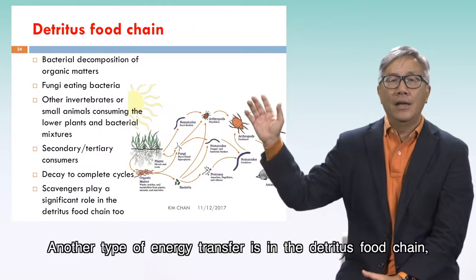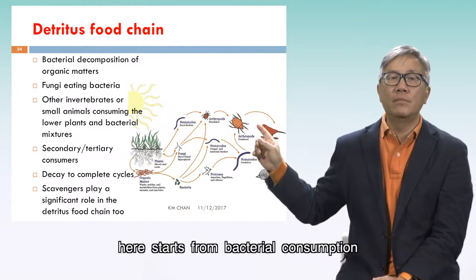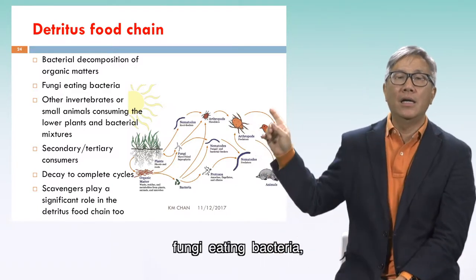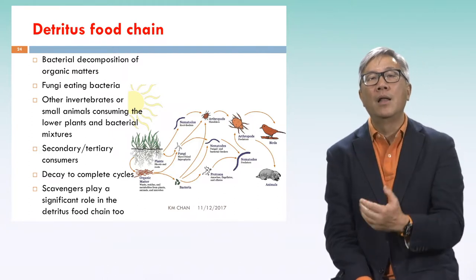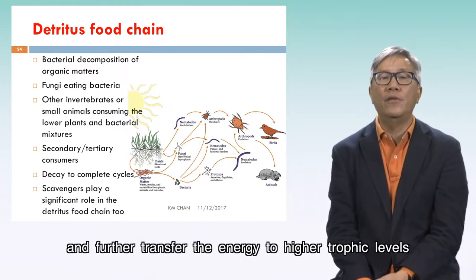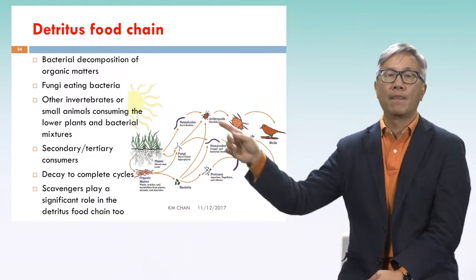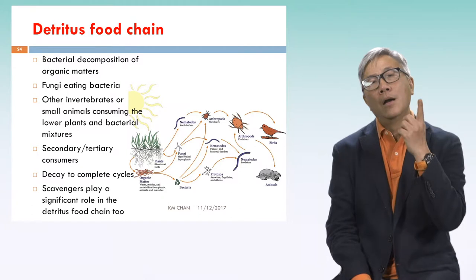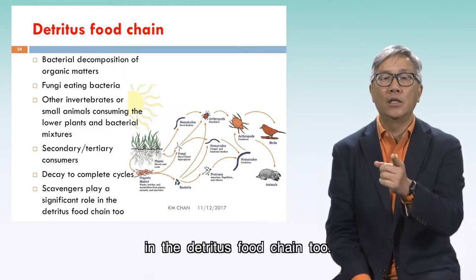Another type of energy transfer is the detritus food chain. It starts from bacterial consumption and decomposition of organic matter, then fungi eating bacteria, other invertebrates picking them up as food, and further transferring the energy to higher trophic levels of secondary and tertiary consumers. To complete this cycle, there must be decay of organic matter, waste, or pulp. Scavengers also play a significant role in the detritus food chain.